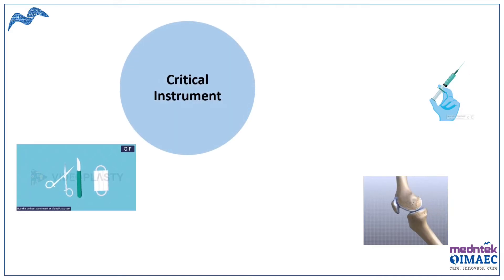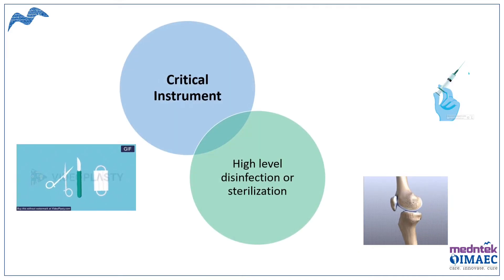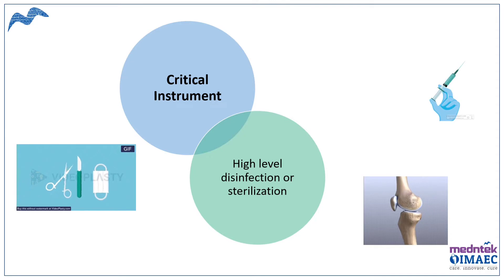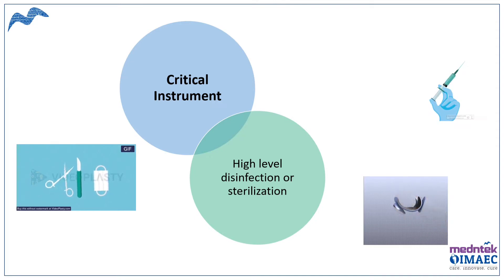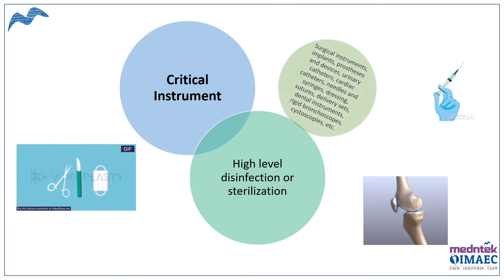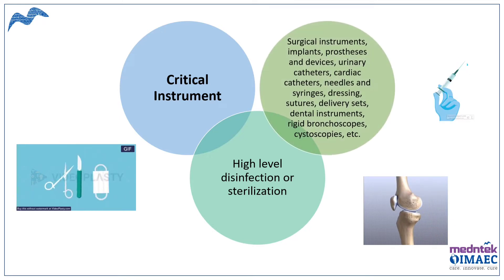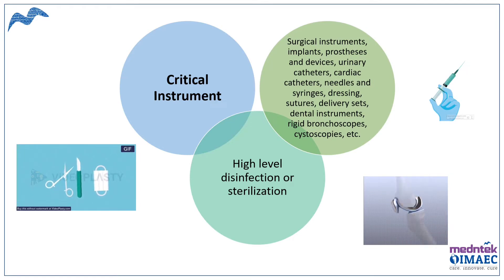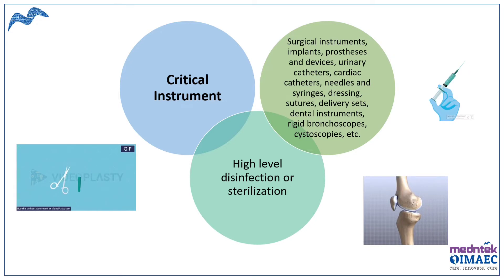Critical instruments require high level of disinfection or sterilization as they come in contact with sterile tissues of the body. For instruments which are heat labile and cannot sustain heat, high level of disinfection using chemicals is recommended. Examples of critical instruments are surgical devices, implants, urinary catheters, cardiac catheters, needles, syringes, bronchoscopes, and cystoscopes.